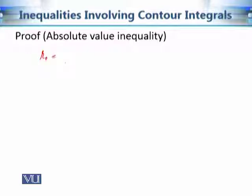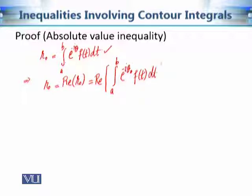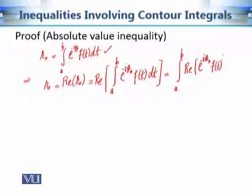So r₀ equals the integral from a to b of e^(-iθ₀)·f(t) dt. This implies that r₀, which is the real part of r₀ since r₀ is a real number, equals the real part of this integral. That is, r₀ equals the real part of the integral from a to b of e^(-iθ₀)·f(t) dt, which equals the integral of the real part. This is because when we discussed integration of complex valued functions of a real variable, we showed the real part of the integral equals the integral of the real part.